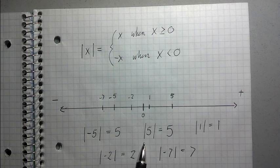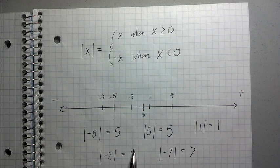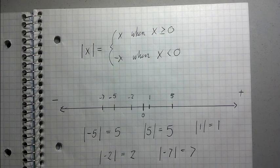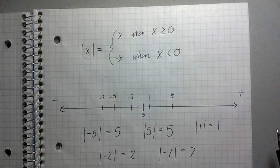So, absolute value, you can think of it as just the positive of a number no matter what it is. Because if it's positive, it stays positive. If it's negative, it changes to positive because it's just distance away from 0.